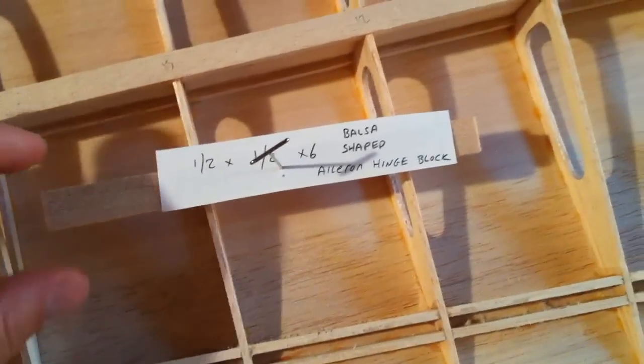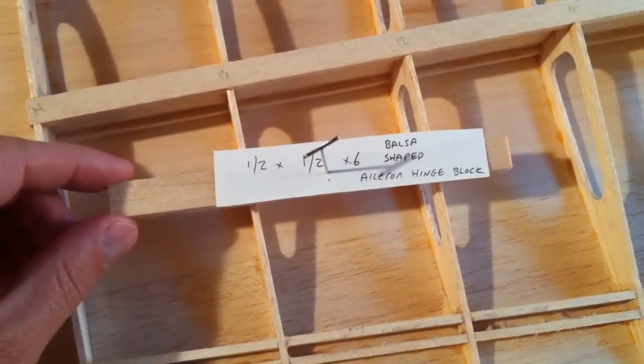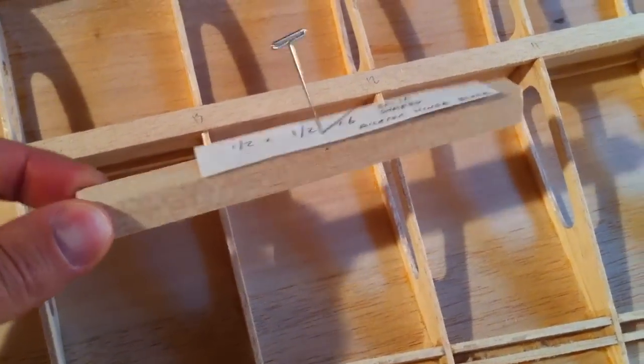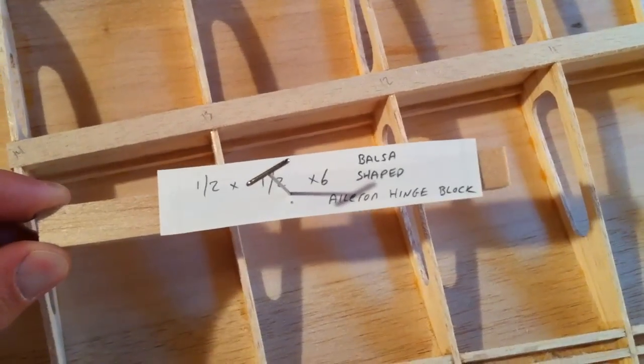I thought I would just point this out, in case I never mentioned it before. If you notice here, I've pinned a piece of paper to this block of balsa. And you can see that it's labeled balsa-shaped aileron hinge blocks.